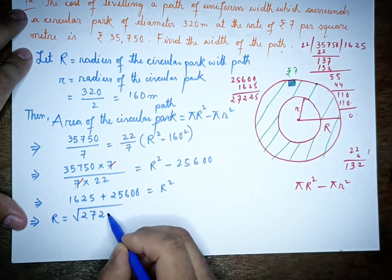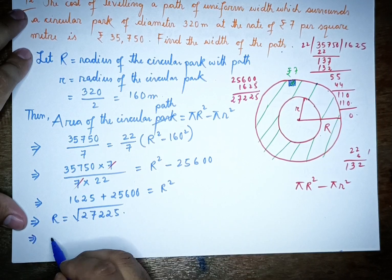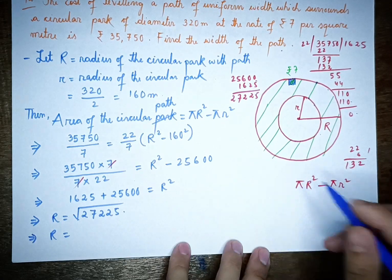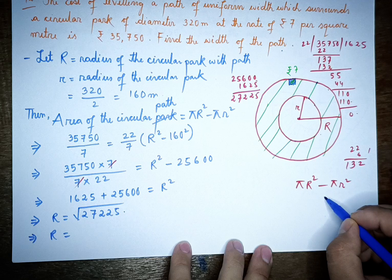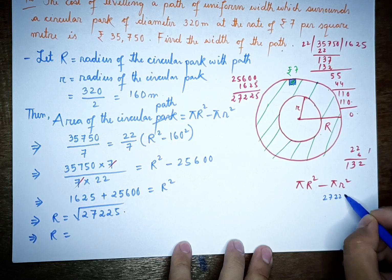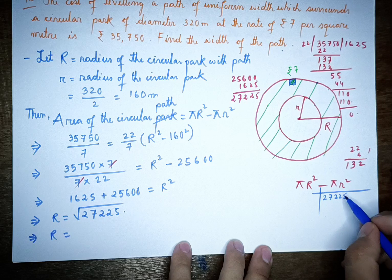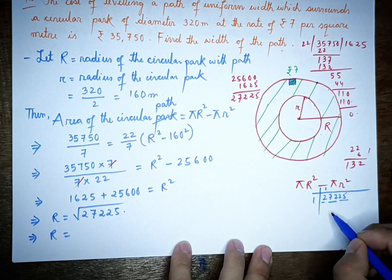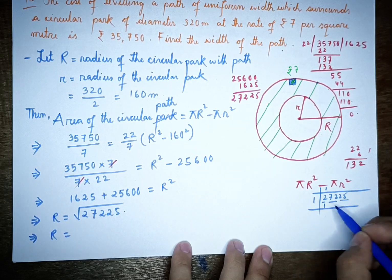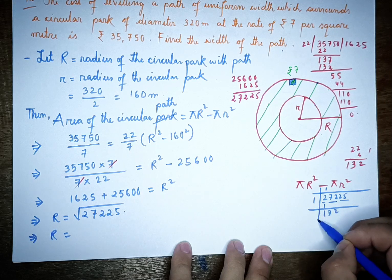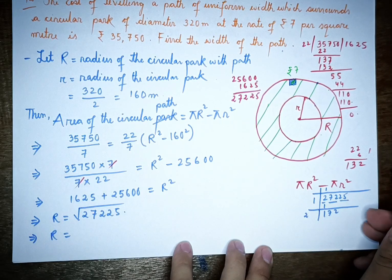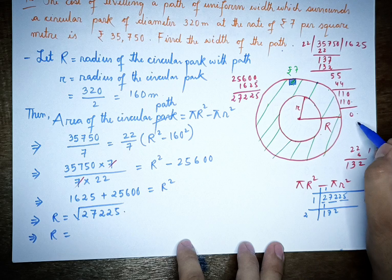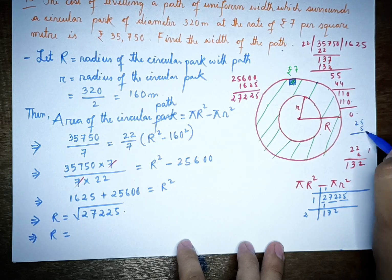So R = √27,225 = 165. This means the outer radius R equals 165 meters.